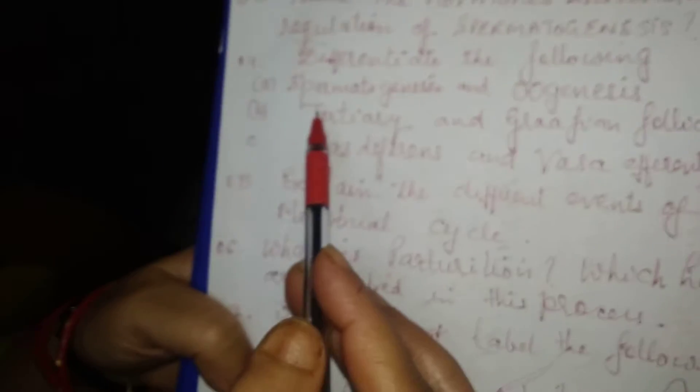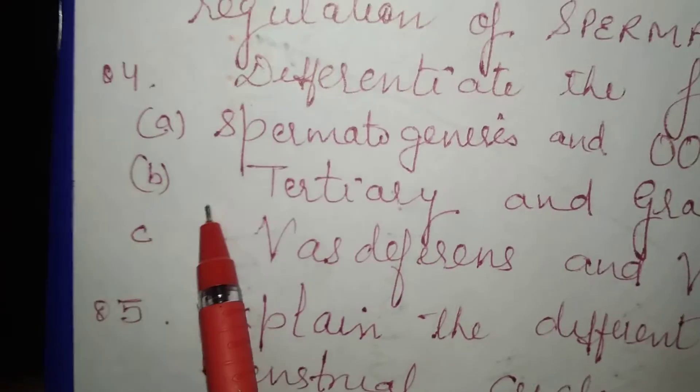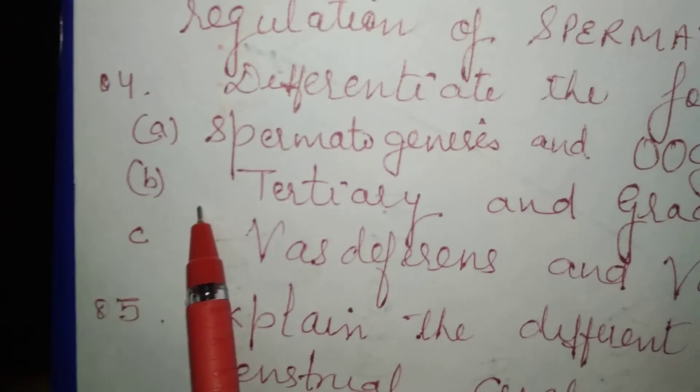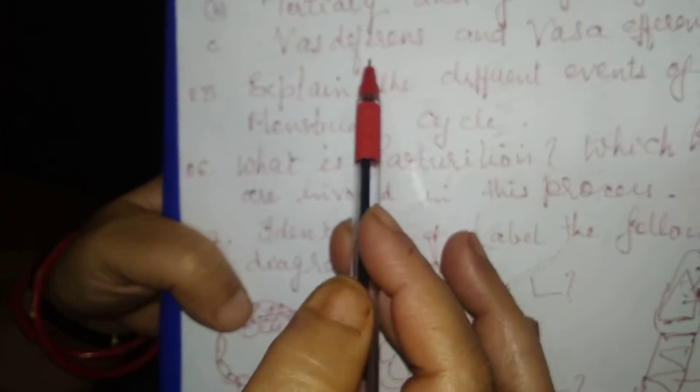The next question is: differentiate the following — number one, spermatogenesis and oogenesis; number two, tertiary and Graafian follicle; number three, vas deferens and fallopian tube. Write at least four points of difference between each pair.